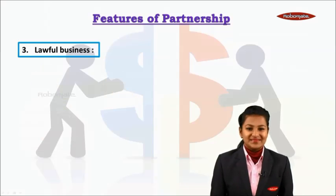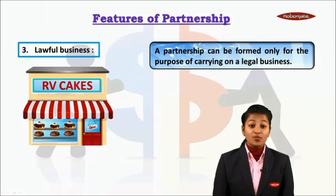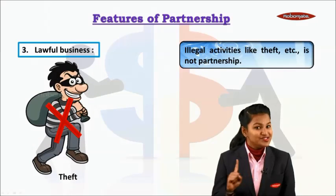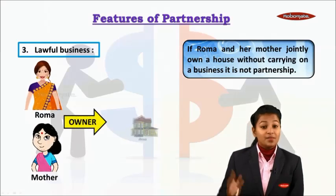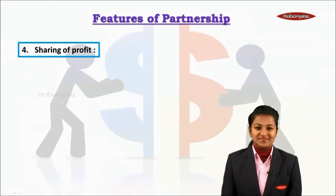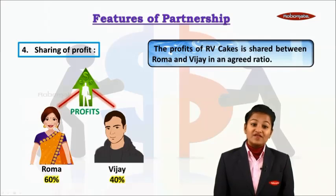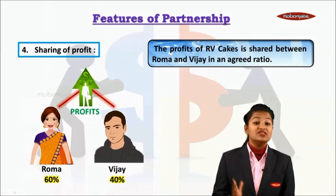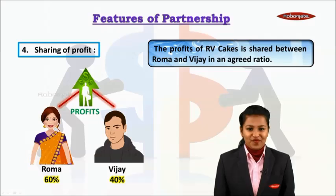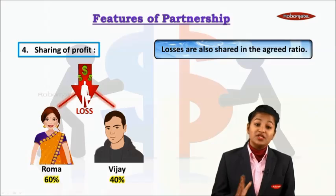The third feature of partnership is lawful business. A partnership can be formed only for the purpose of carrying on legal businesses; illegal activities like theft are not partnership. Also, if Roma and her mother jointly own a house without carrying on a business, it is not partnership. The fourth feature is sharing of profits. The profits of RV Cakes are shared between Roma and Vijay in an agreed ratio — Roma has a 60% share in profits whereas Vijay has a 40% share.